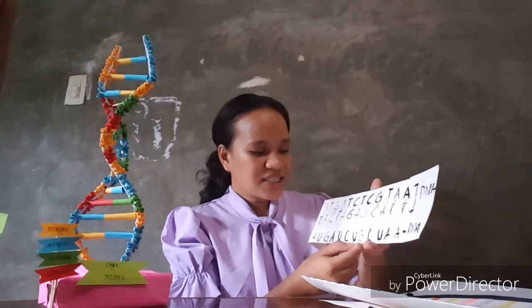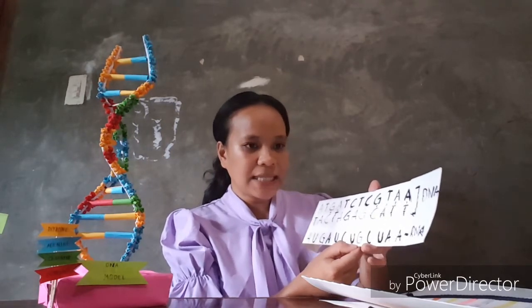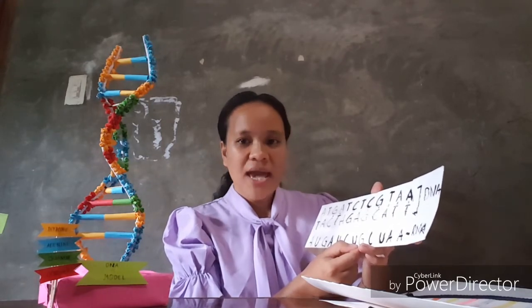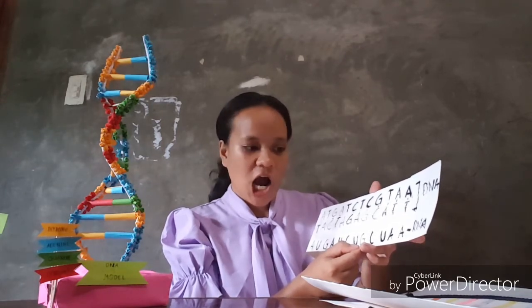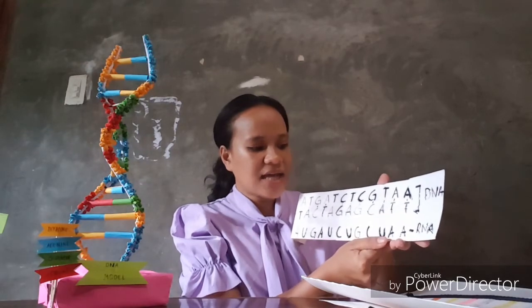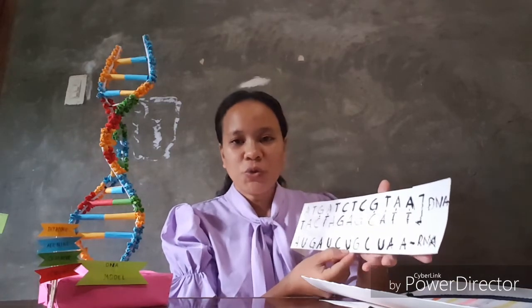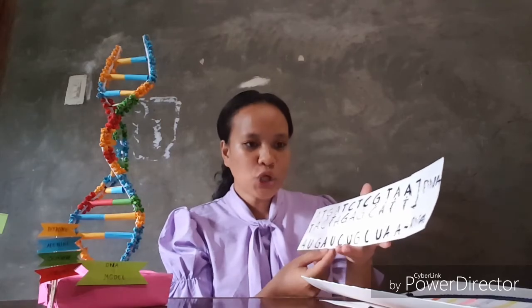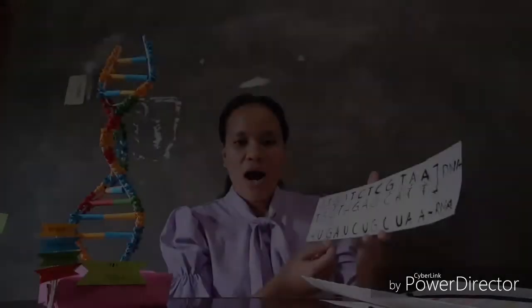I also have uracil, guanine, and cytosine in the codon chart — we result with SER. Uracil, adenine, adenine — the result would be stop. So the amino acids form a polypeptide.